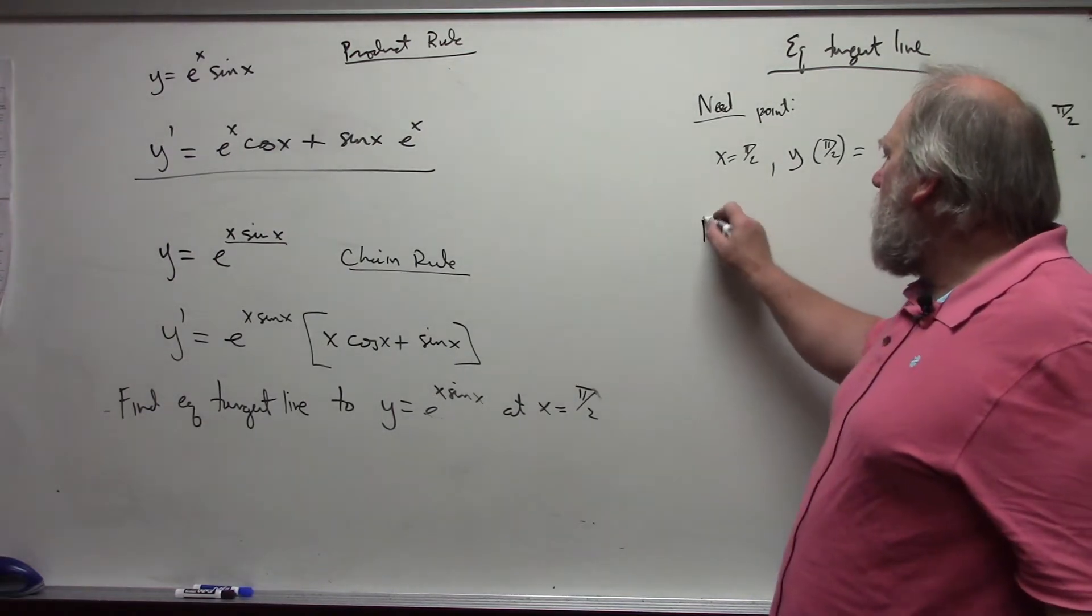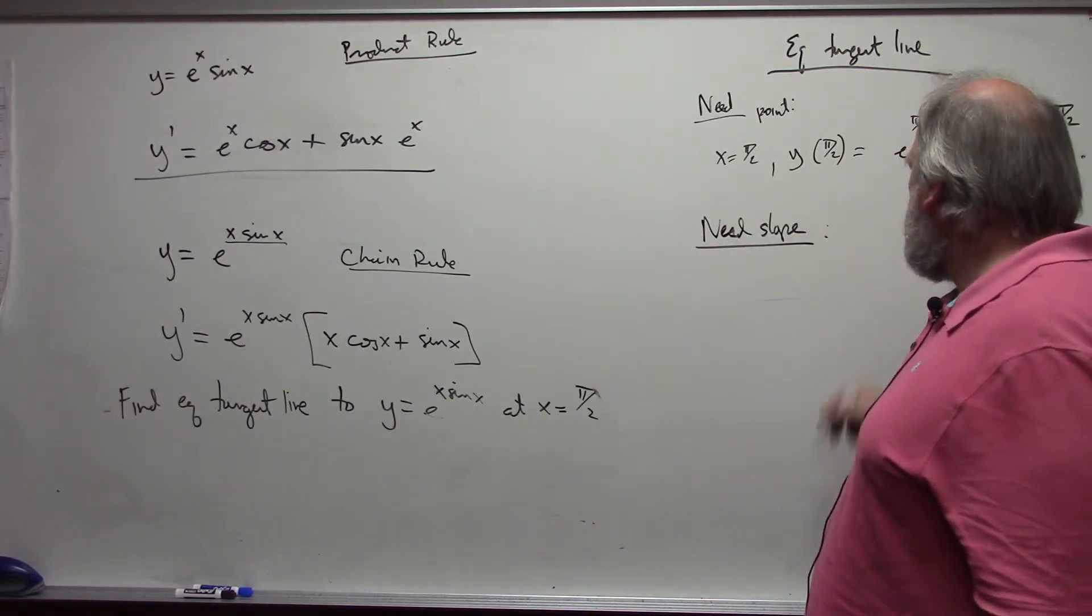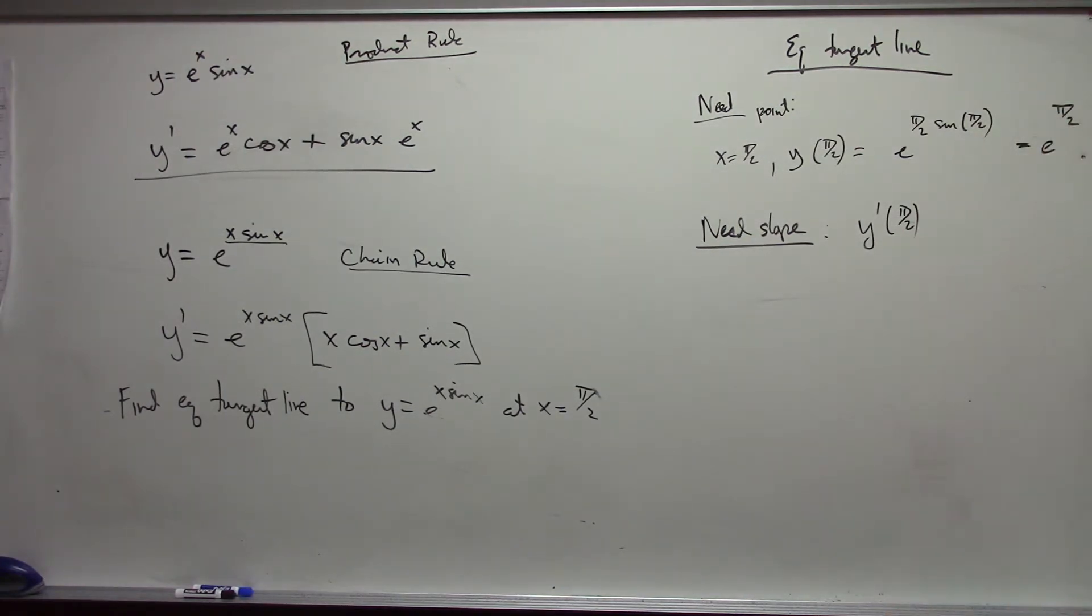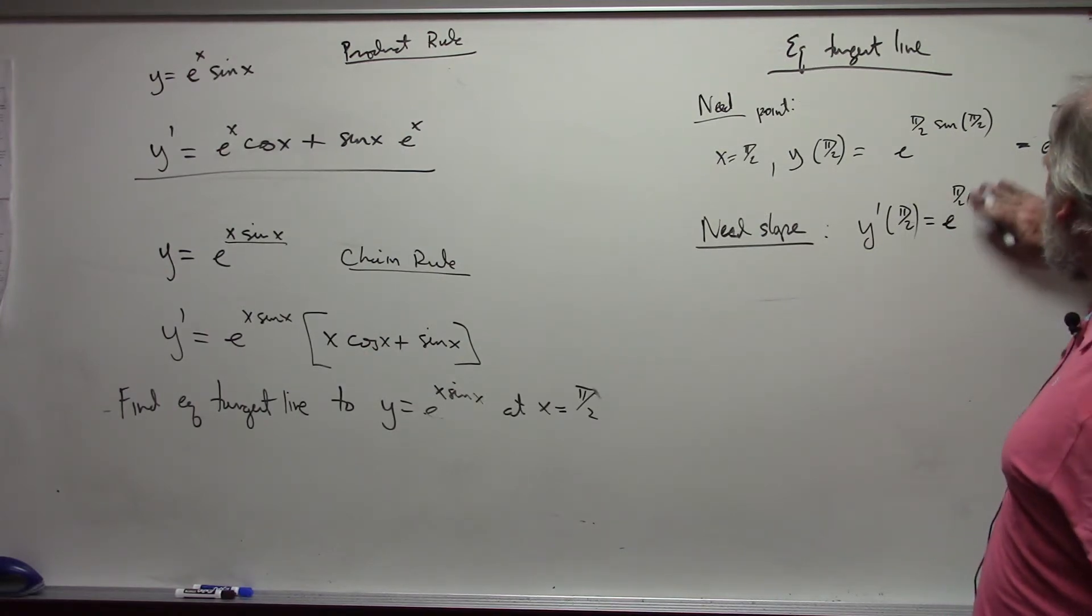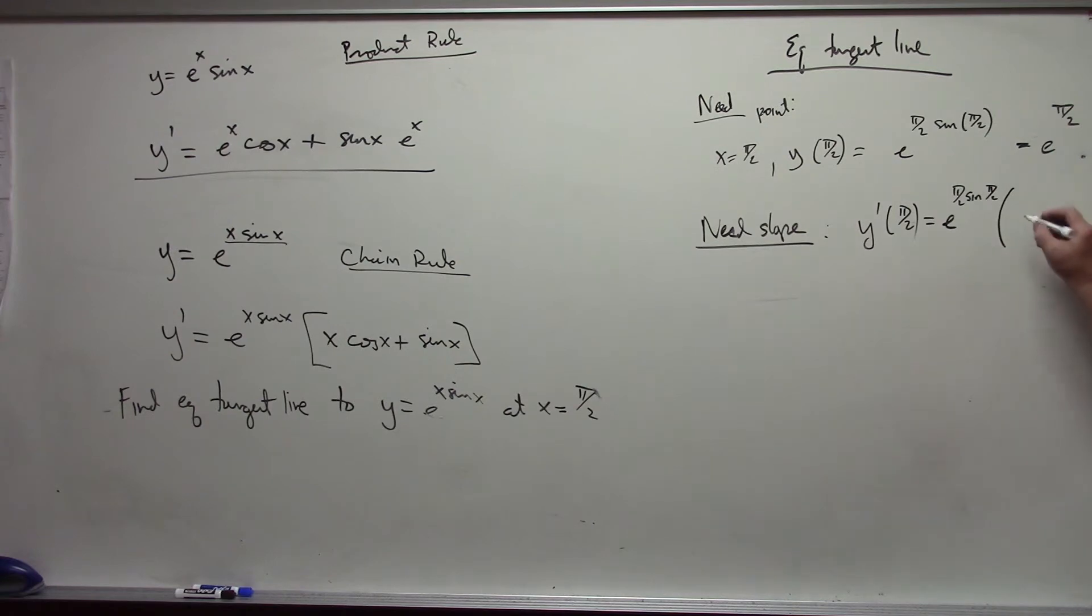I also need the slope, which is the derivative at pi over 2. The derivative at pi over 2 would be, using my derivative rule that I just found, this is going to be e to the pi over 2 times the sine of pi over 2 times pi over 2 cosine of pi over 2 plus sine of pi over 2. And I should have worked this out a little bit better.